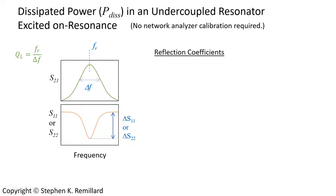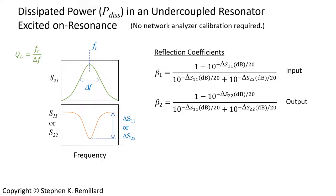Those give reflection coefficients, beta 1 on the input and beta 2 on the output, where these delta S11 in decibels are positive numbers. So it's how many decibels down the dip goes from the background level.